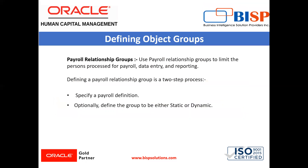Next is the payroll relationship group. Use a payroll relationship group to limit the persons processed for payroll data entry and reporting. Define a payroll relationship group in a two-step process: first, specify the payroll relationship; second, define the group to be either static or dynamic. To define a static group, select the payroll relationship and assignments to include in or exclude from the group. To define a dynamic group, use a fast formula of type payroll relationship group, which contains the criteria to establish the payroll relationship and assignments included in the group.